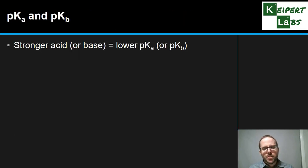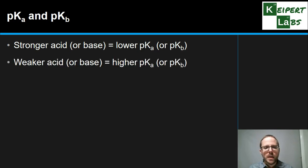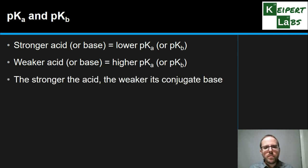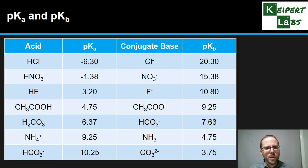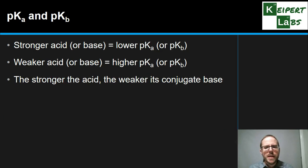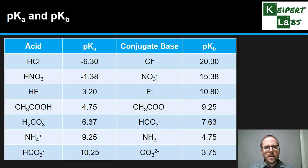And so what we've seen is that a stronger acid equals a lower pKa value. Or we can apply the same logic to a base. The stronger the base is, the lower its pKb. The weaker the acid is, the higher its pKa. And same sort of thing for base. And what we've just said, though, is that the stronger the acid is, the weaker its conjugate base is. And so then that means that we're going to see a relationship between the pKa and the pKb for the conjugates in an equilibrium.